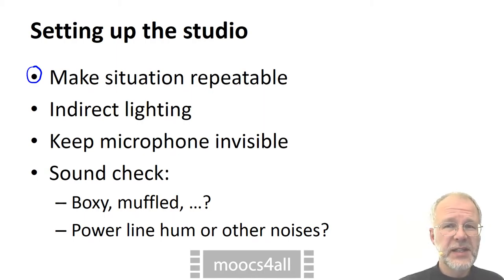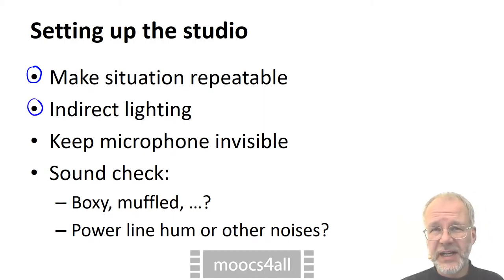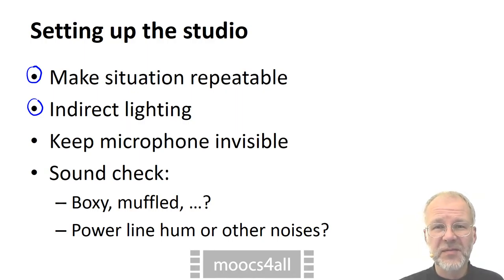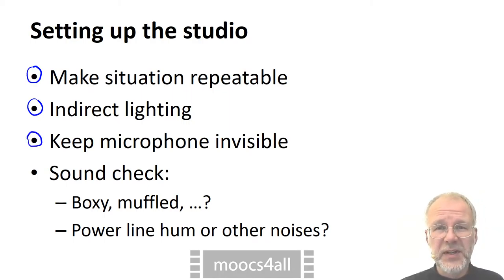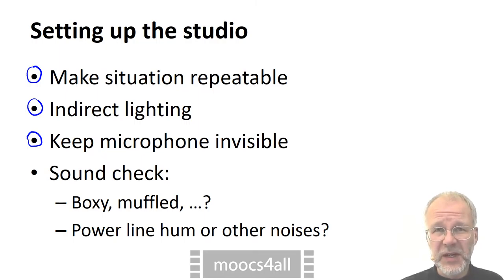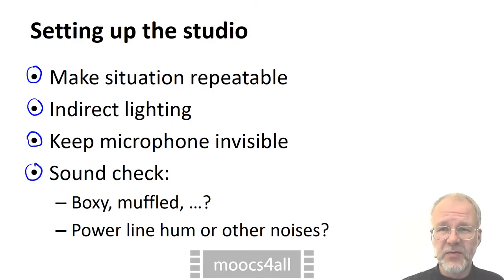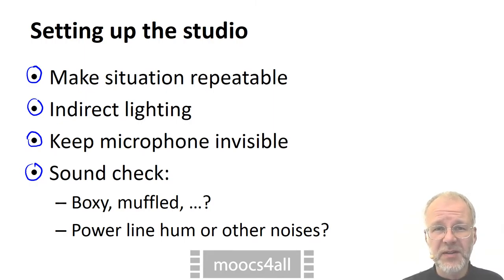Indirect lighting is easier to reproduce, because highlights and shadows cannot be at the wrong place when there are none. If you use a big microphone, find a spot for it where it is close to the mouth but safely out of the visible frame of the camera. Sound quality is vital — make test recordings to check for problems with resonances or reverberation, and to check for all sorts of noise.